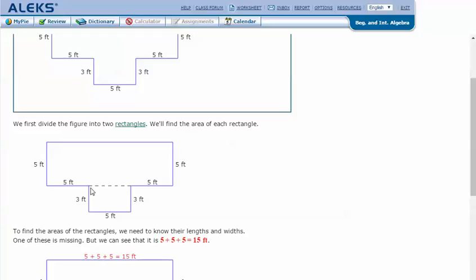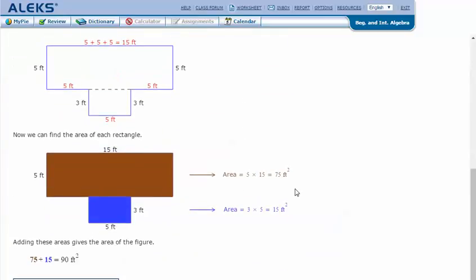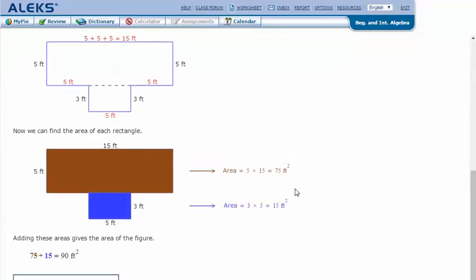But we've got 5 here, 5 here, and 5 here. If this side is 5, so is this side. 5 plus 5 plus 5 is 15, and if this side is 15, so is this side.